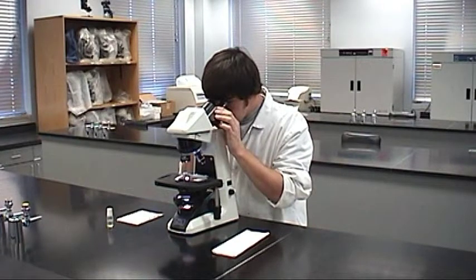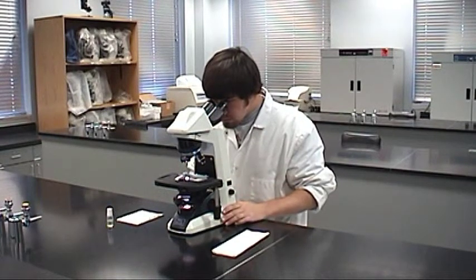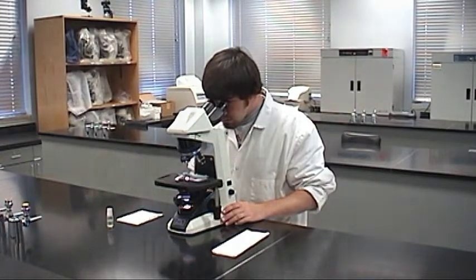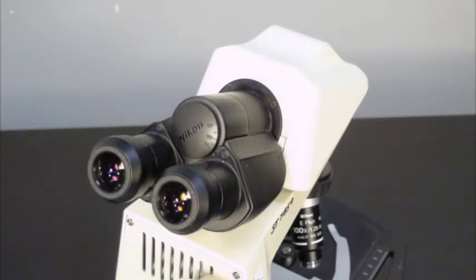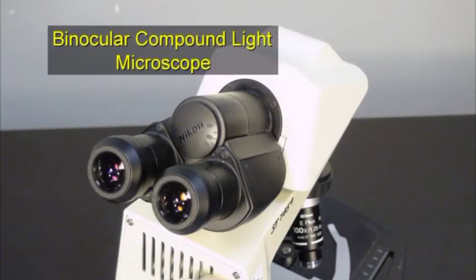This video gives you an overview of the parts of a microscope and their functions. The microscope you will use in this course is a binocular compound light microscope. This description lists features that distinguish it from other types of microscope.